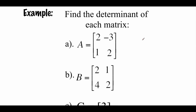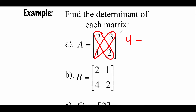We've got a few examples to work through — we're going to find the determinant of each matrix. Looking at example A, we've got entries 2, negative 3, 1, and 2. We group up diagonals and multiply: 2 times 2 is 4, minus 1 times negative 3 which is negative 3. The double negative turns into addition, and we get 7 as that determinant.